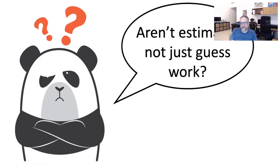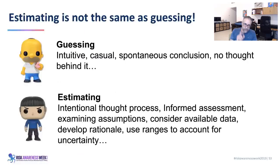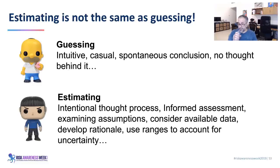Another question: isn't defining estimates just guesswork? No — we are estimating, not guessing. Guessing is intuitive, casual, and spontaneous with no rationale. Estimating is intentional: an informed assessment where we examine assumptions, consider all available data, develop a rationale, and use ranges to account for uncertainty — wider ranges when uncertain, narrower when more certain. Douglas Hubbard has done extensive work on calibration training. Before training, when people say they're 70% sure, they're actually only about 55% sure. After training, 70% confidence really means 70%. You can get better at estimating through training; you cannot get better at guessing.